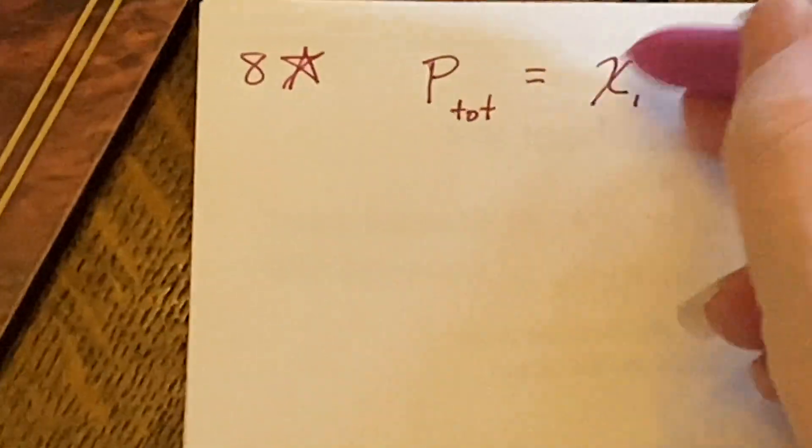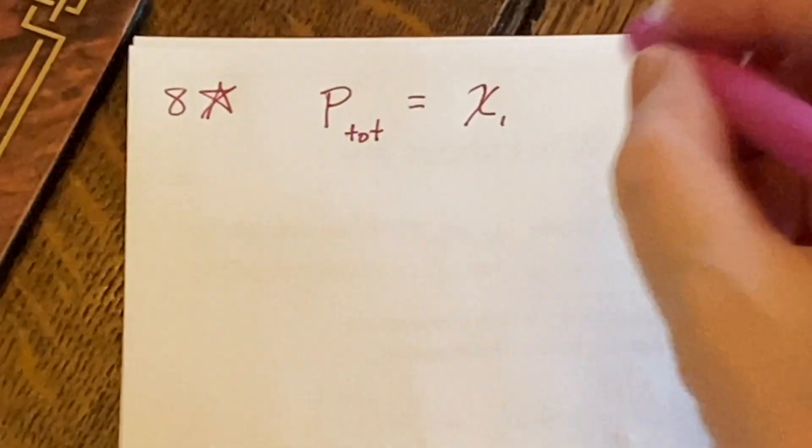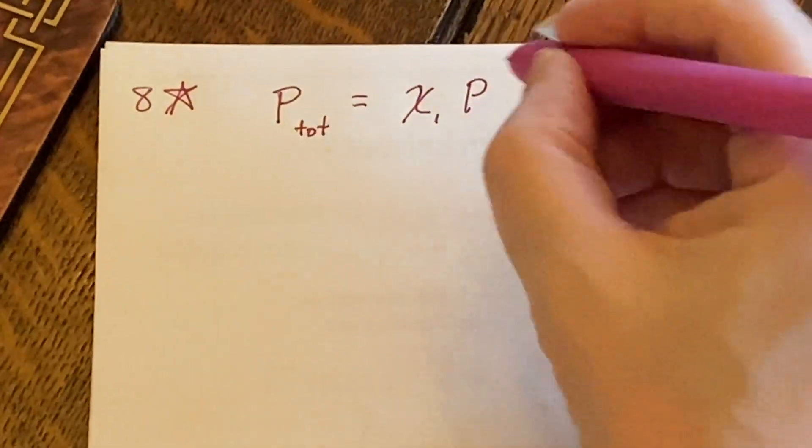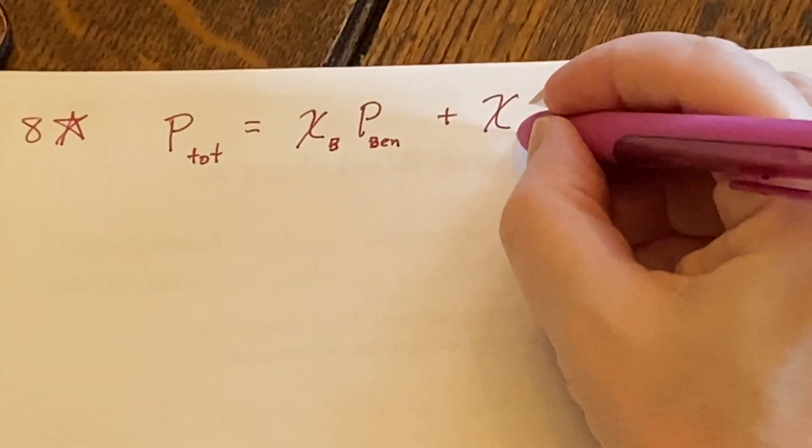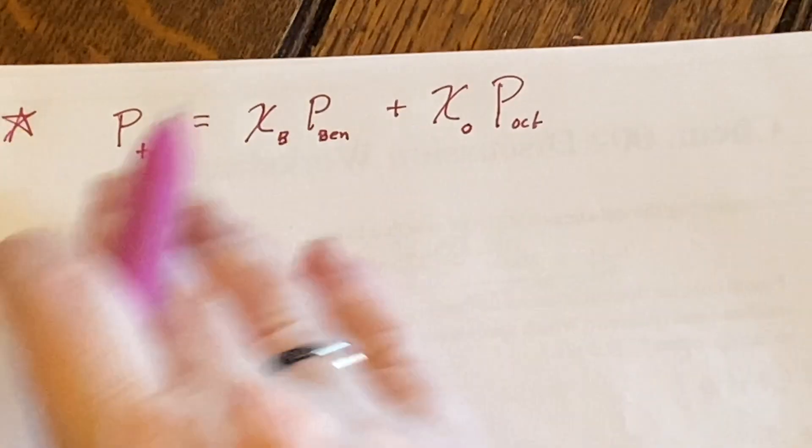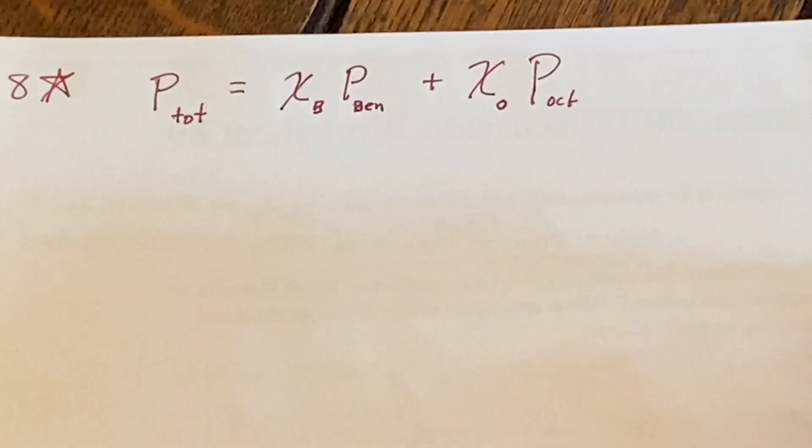Here's a chi. It's not really an x. It's got a little more swoopy and tallness to it. But the pressure, let's make this the benzene. And then this one is going to be the octane. So this is what we're going to use to help us along the way.